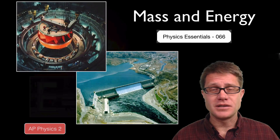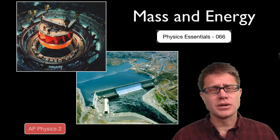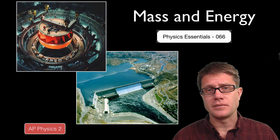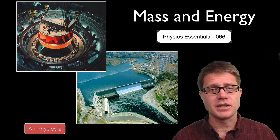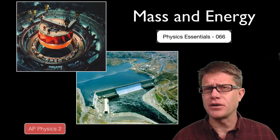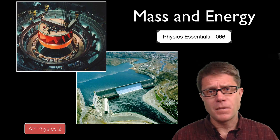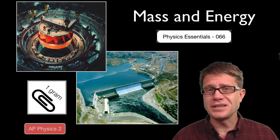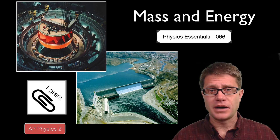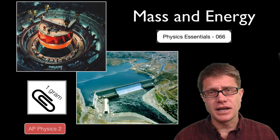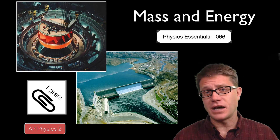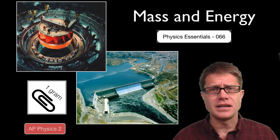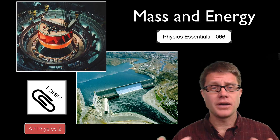That might seem odd, but it is even odder when you look in the other direction — energy will be converted back into matter. At Grand Coulee Dam, it has been calculated that every four hours about a gram of matter is created. That gram of matter is actually the heat and light in the towns that the dam serves. So how could light and heat be matter? Well, they are.